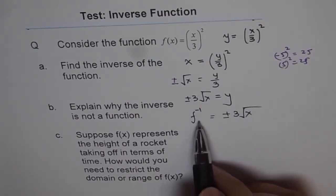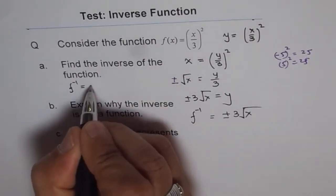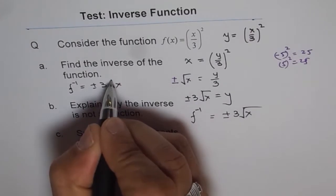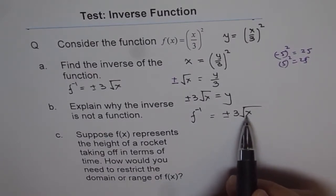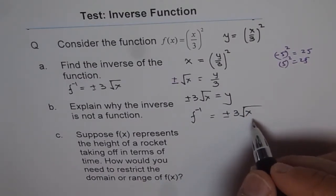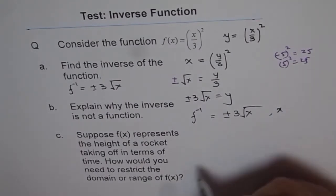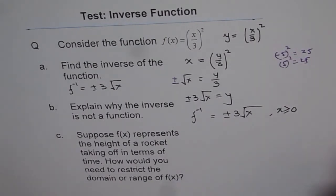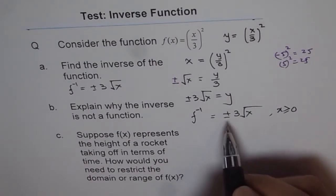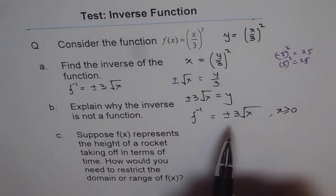For students aiming for 90+, they can lose marks for any small mistake. So we get the inverse of the function, which is ±3√x. Now part b: explain why the inverse is not a function. Except for x = 0 (where the value is 0), for any other value of x — noting the domain must be ≥ 0 — you get two values, ±3√x. So it fails the vertical line test and therefore is not a function.